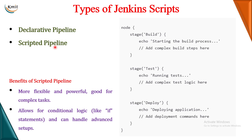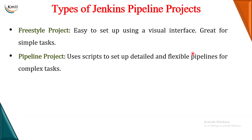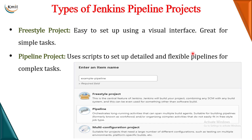Now, where can I use these scripts? These scripts in Jenkins can be used in two different types of projects. If you remember last time we created projects and I gave you the list of projects - freestyle project, pipeline, multi-configuration project. But this scripted pipeline can be used in two different types of projects: one is called as freestyle project and the other one is called as the pipeline project. Today we shall be talking about how to create a pipeline project because we have already seen the freestyle project.